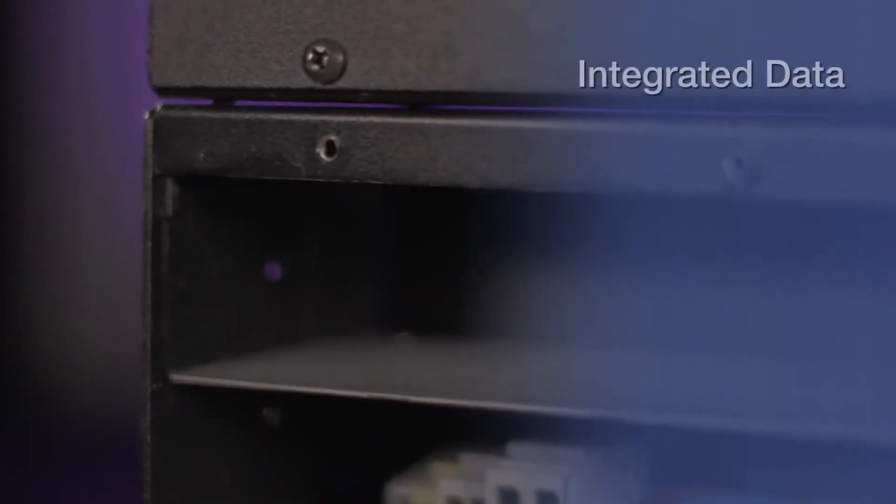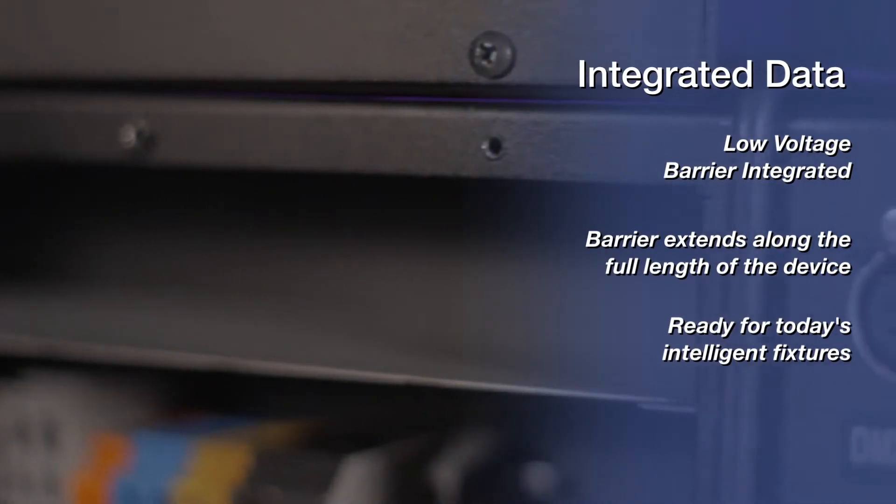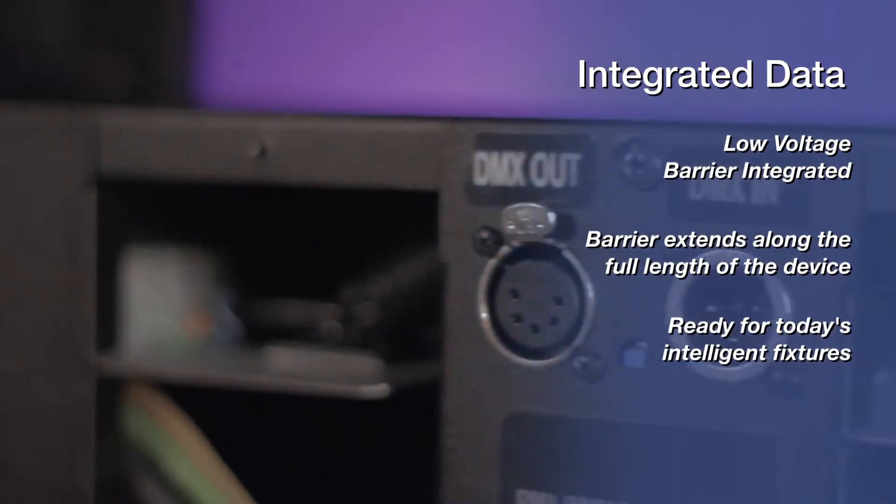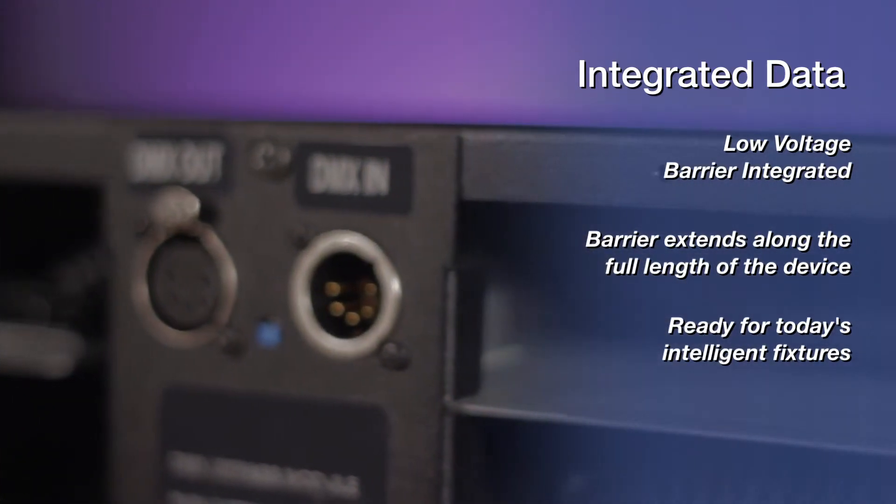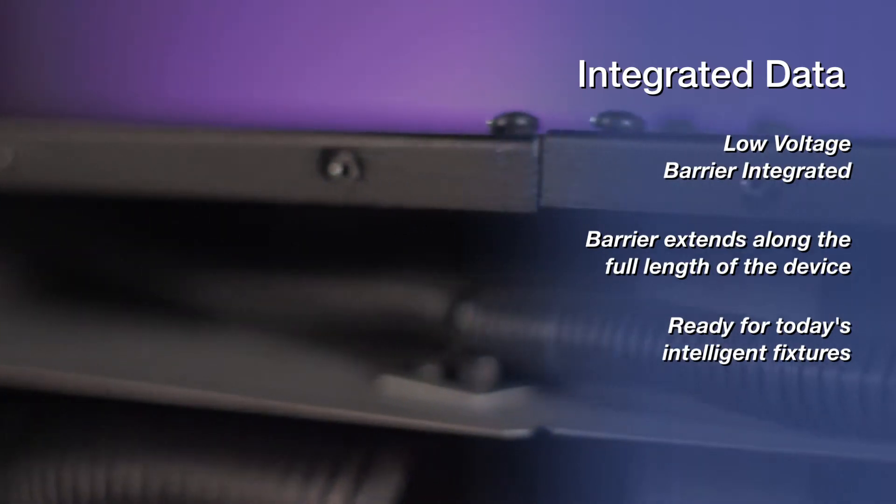With the 450 Distro from Altman Lighting, data is never an afterthought. All connector strips and plug boxes can be created with an integrated low voltage barrier that runs across the top of the device.